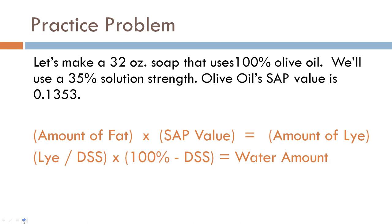Here's a practice problem: make a soap with 32 ounces of 100% olive oil using a 35% solution strength. The olive oil SAP value is 0.1353. Pause the video, determine the amount of lye needed, and then calculate the water amount using a 35% solution strength. Once you have your answer, hit play and see if you did the math right.